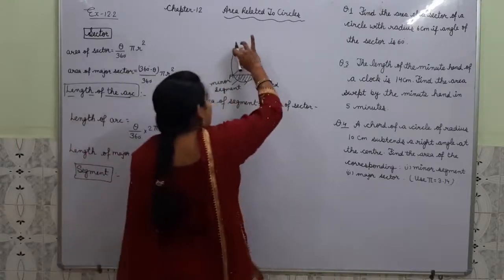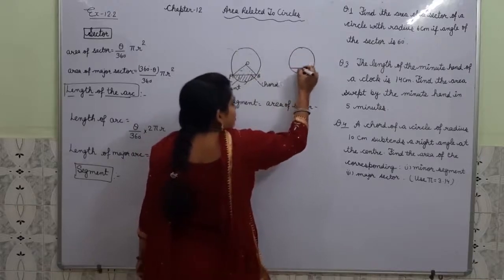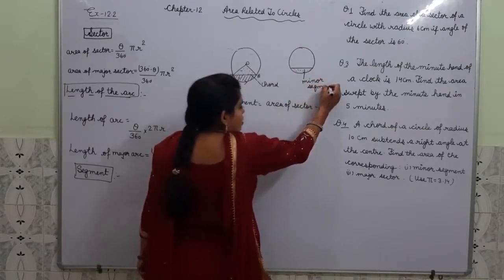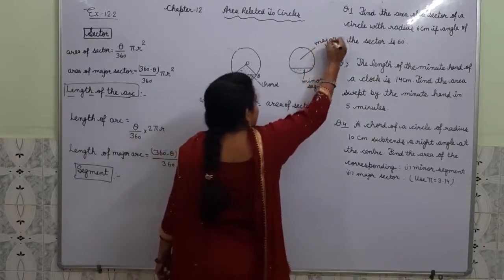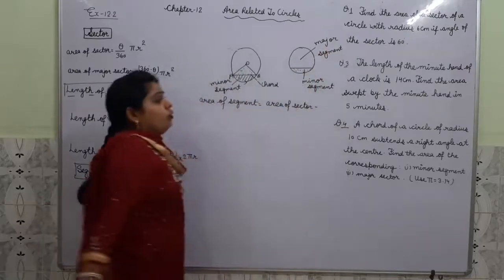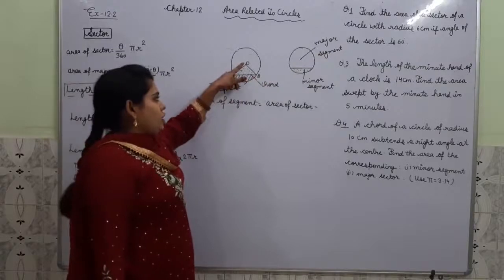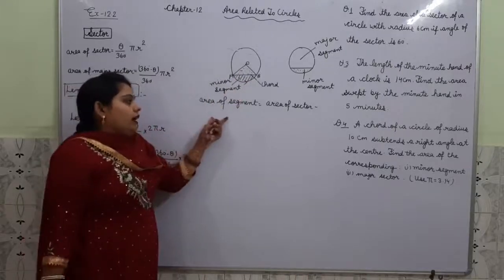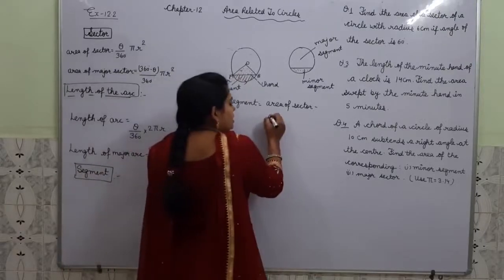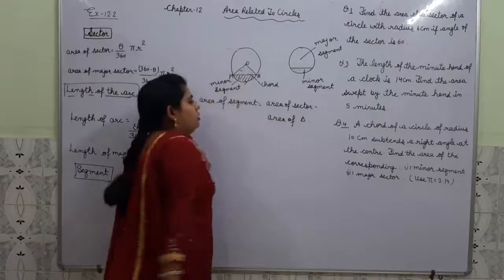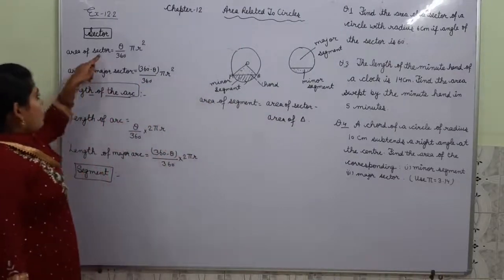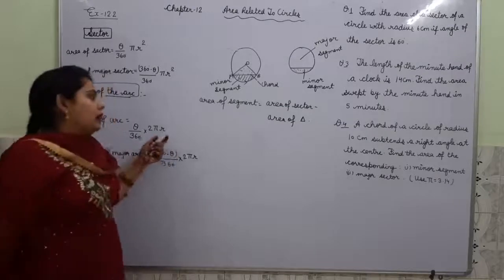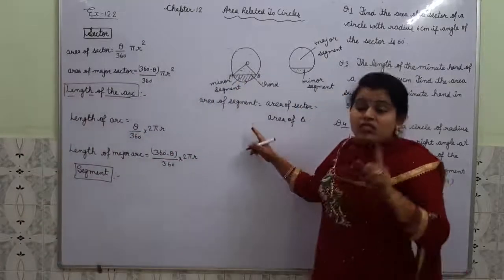The remaining larger area is the major segment. If we want to find the area of this segment, we join the points of the chord to the centre of the circle so that we get a triangle. Area of segment equals area of sector minus area of triangle — this is the area for minor segment. When we say sector, it means minor sector; arc means minor arc; segment means minor segment.